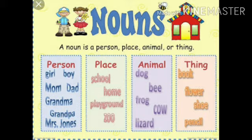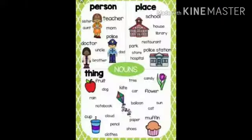Animals: dog, bee, cow, frog, lizard. Things: book, flower, shoe, and pencil. Some more examples are also given here.